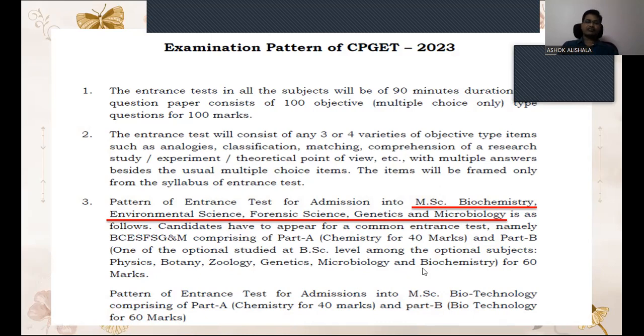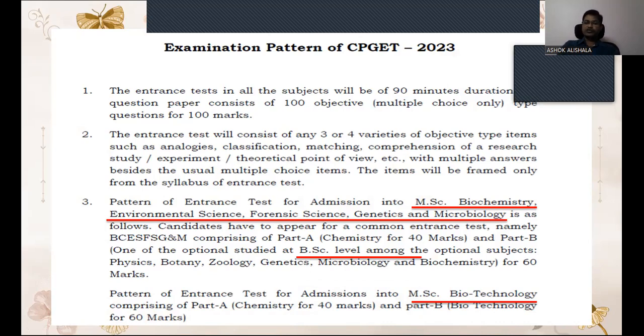And if you see the pattern in the entrance test for MSC Biotechnology, it comprises of Part A which is chemistry fully 40 marks, and Part B consists of biotechnology. Now, let us see MSC chemistry question paper analysis.